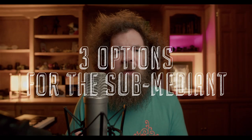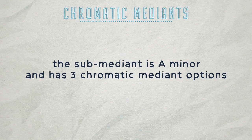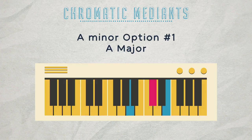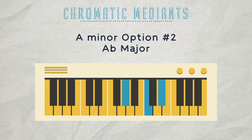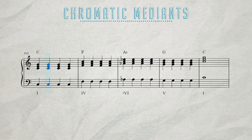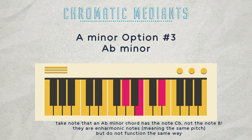Now let's go over the options for our sub-mediant chord, which is A minor. While the notes are changing, the chord functions are exactly the same as the three we just went over. The first one is an A major chord, where C sharp is our chromatic note. The next chromatic mediant option is A flat major, where the notes A flat and E flat are chromatic. And finally, we have an A flat minor chord, where all three notes are chromatic — A flat minor is one half step down from A minor.